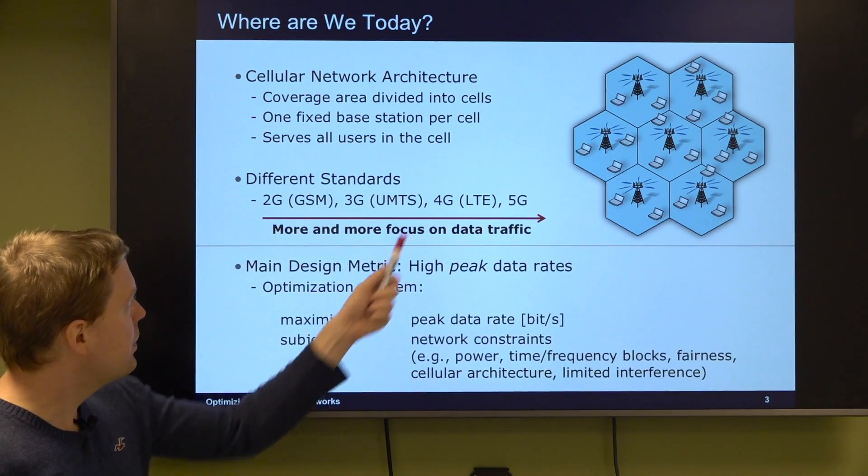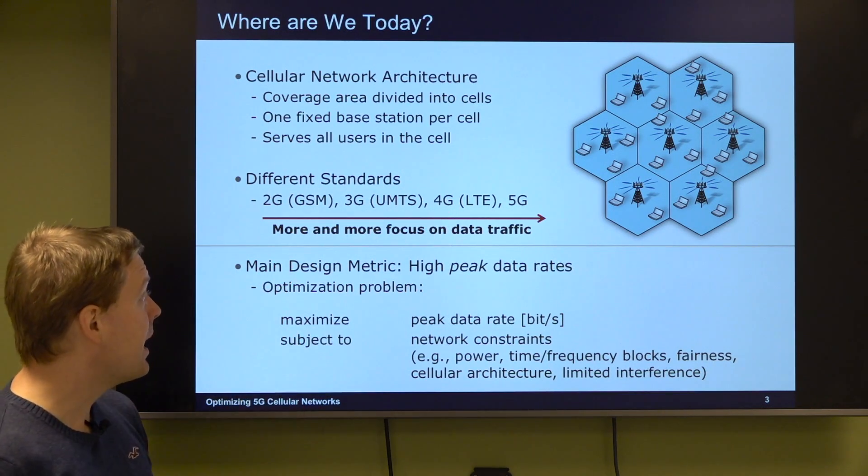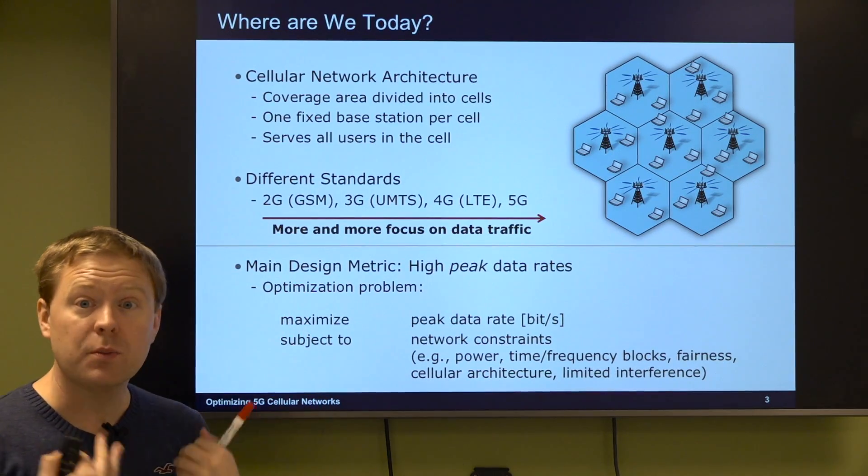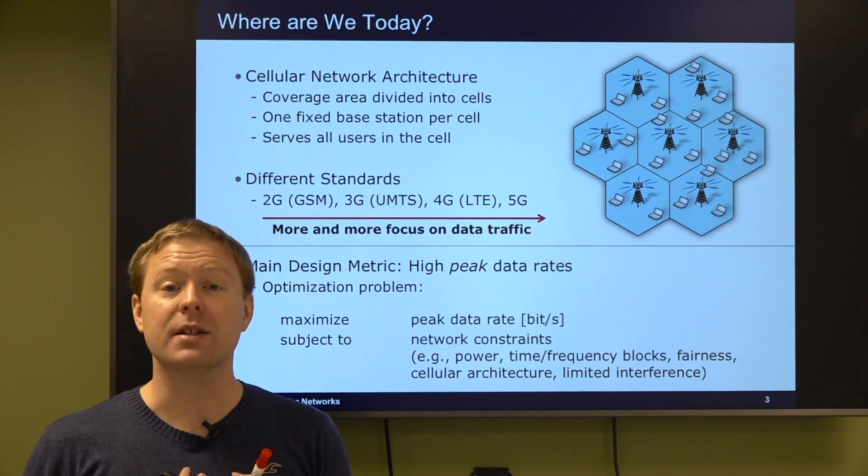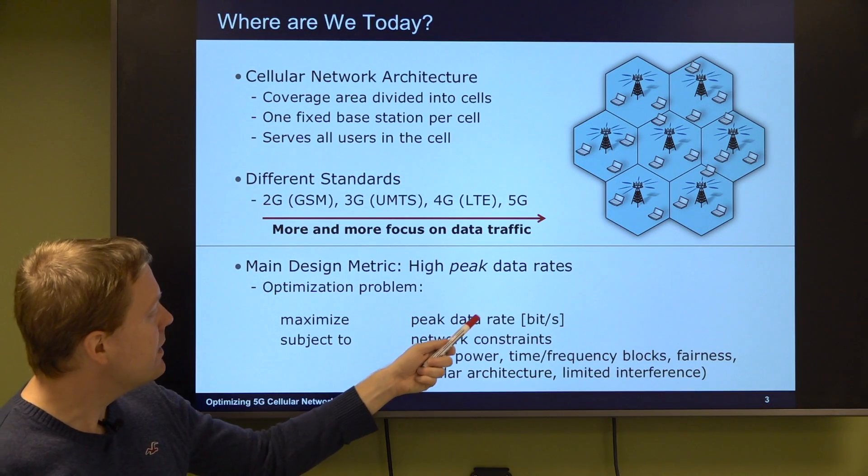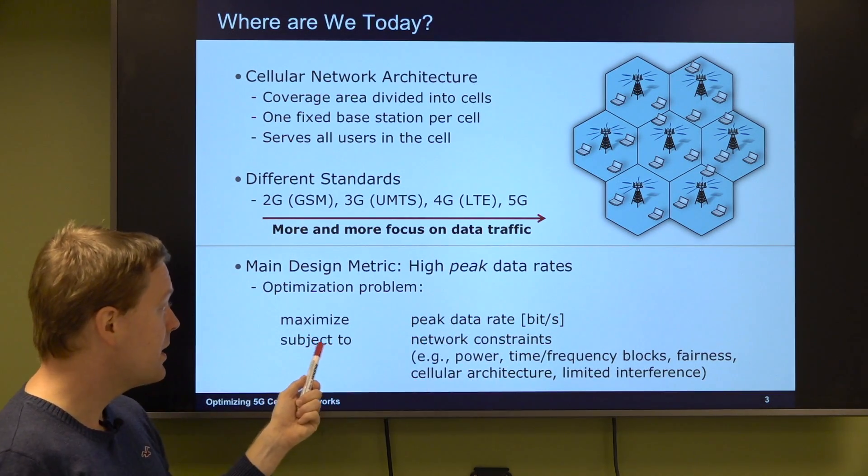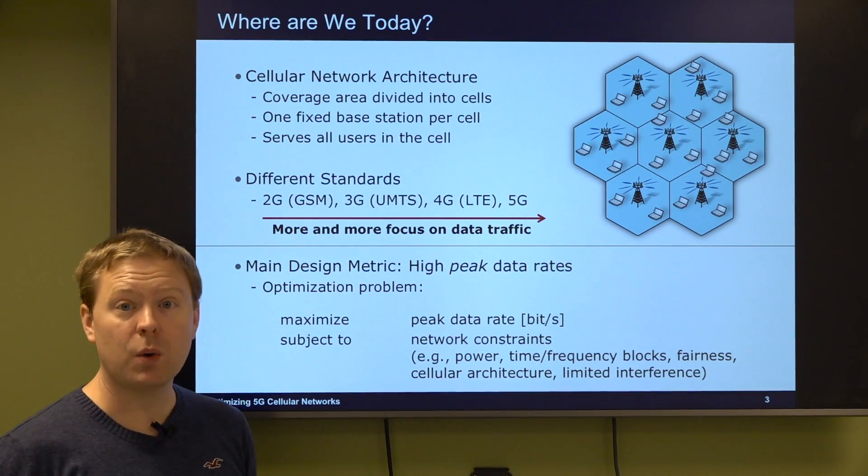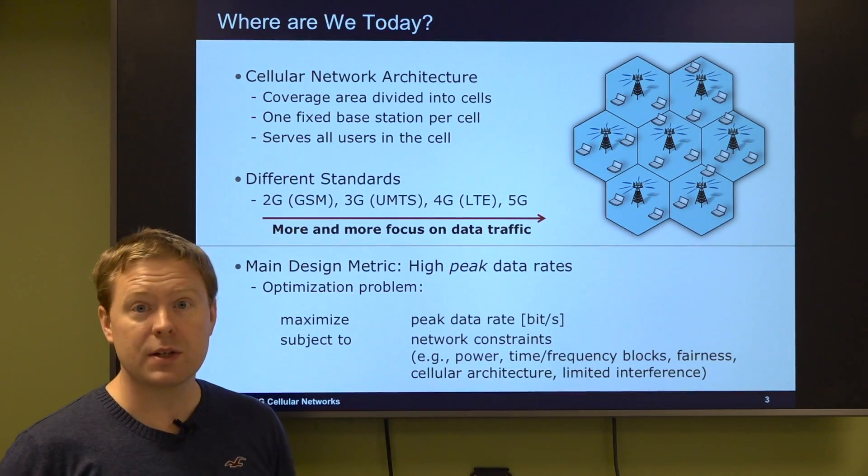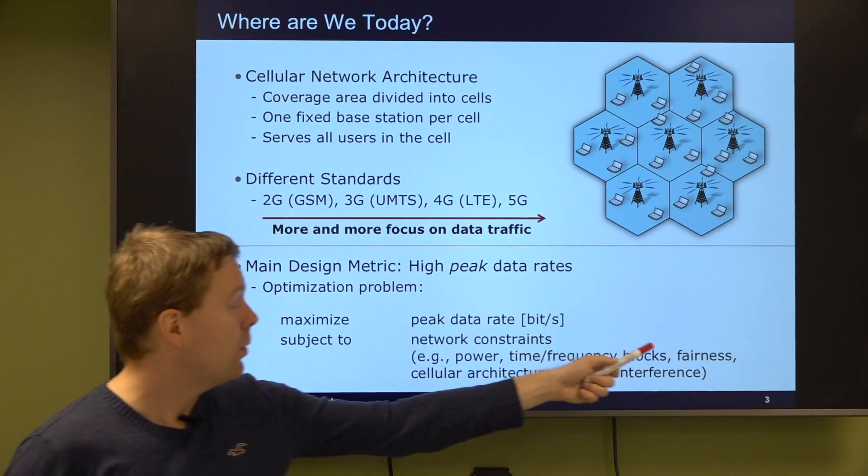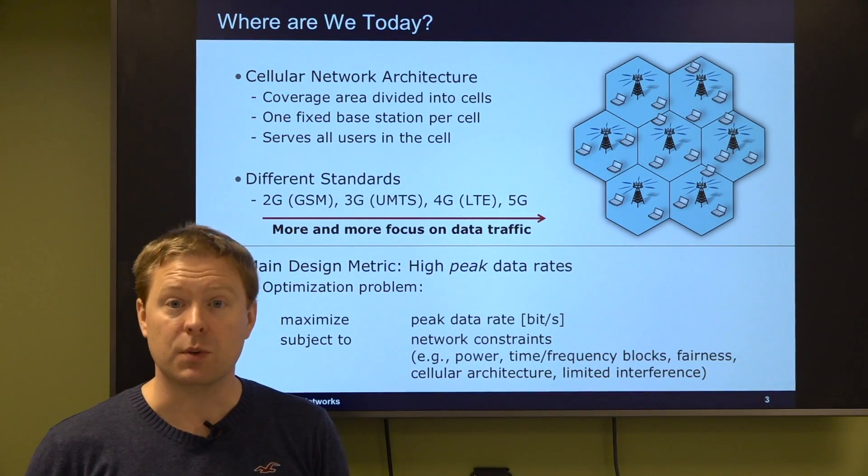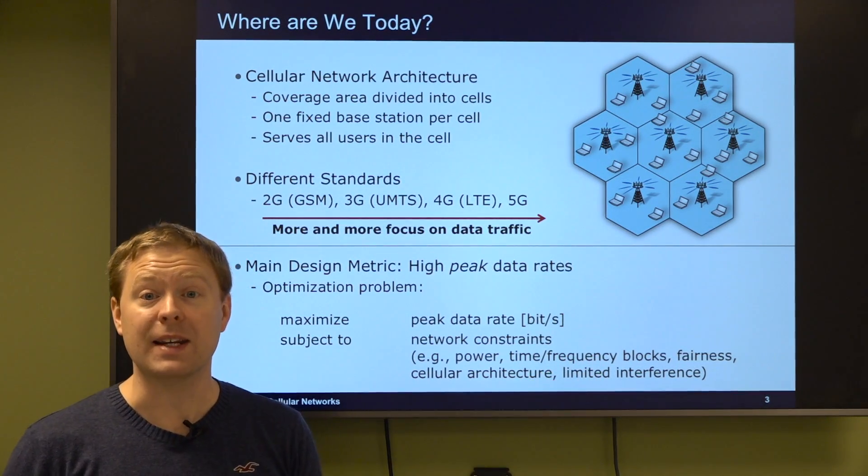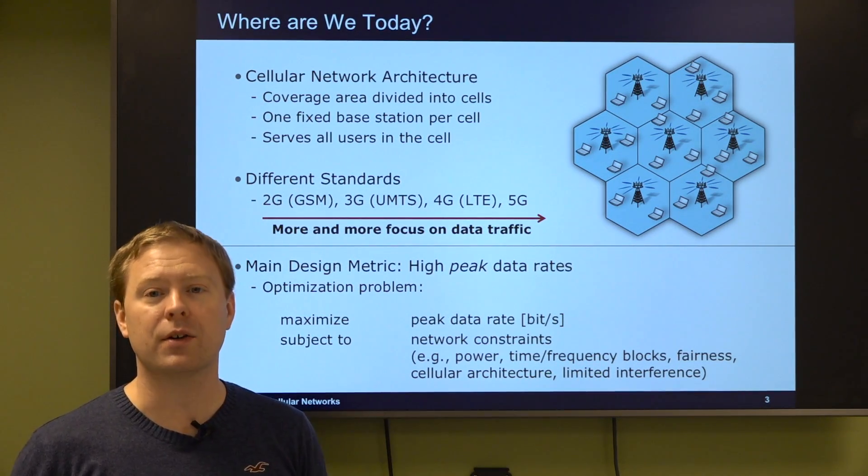At least up to 4G the main design metric has been to get high peak data rates in the networks. The optimization problem that we as network designers have solved is to maximize the peak data rate measured in bits per second subject to various network constraints such as how much power we can spend, what type of time and frequency resources can we allocate, what fairness we would like to have between different users.